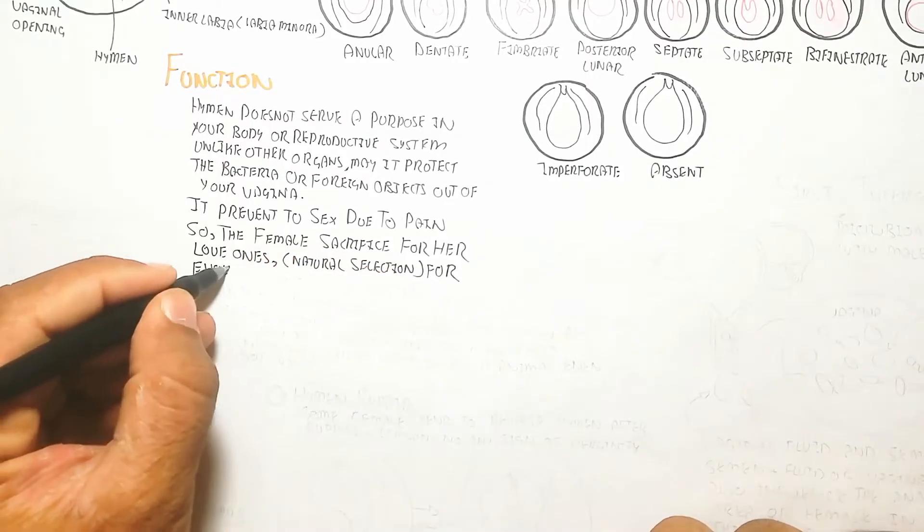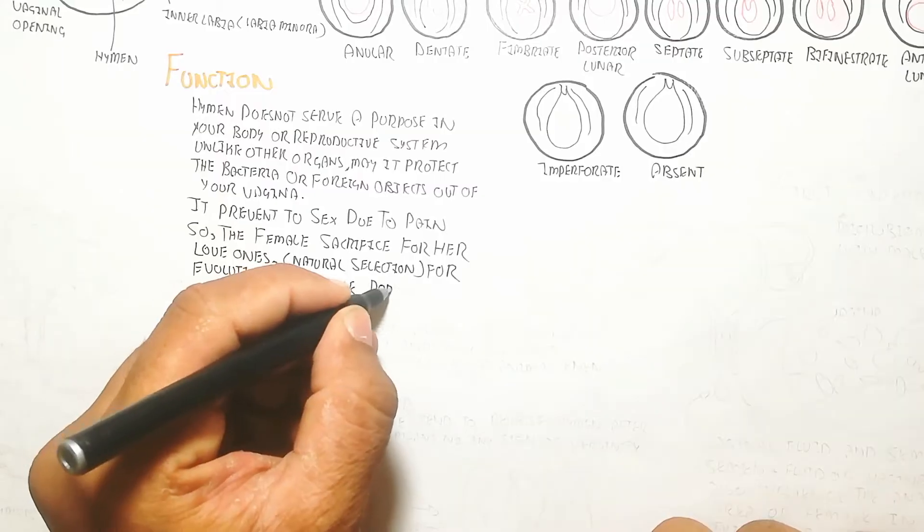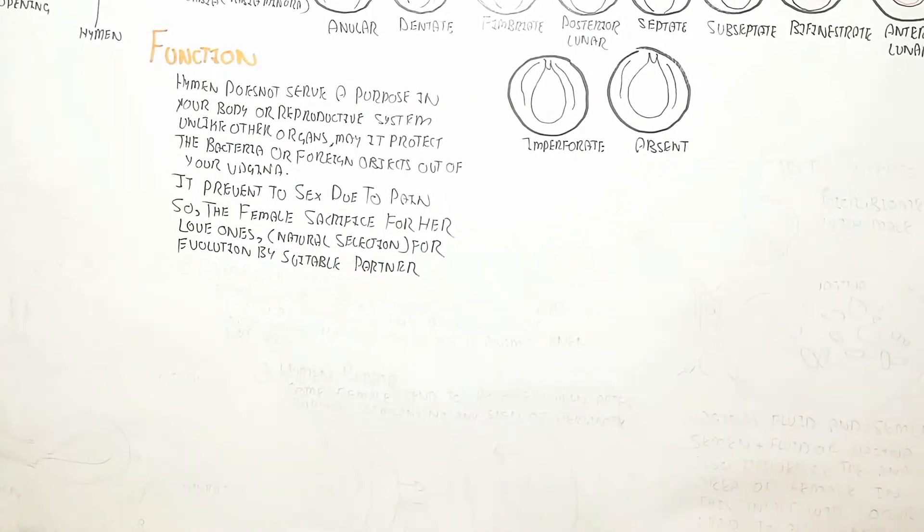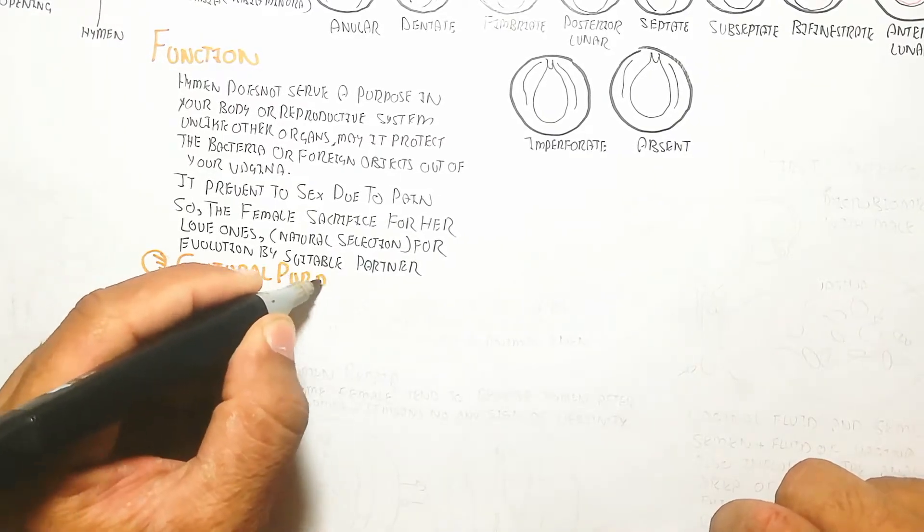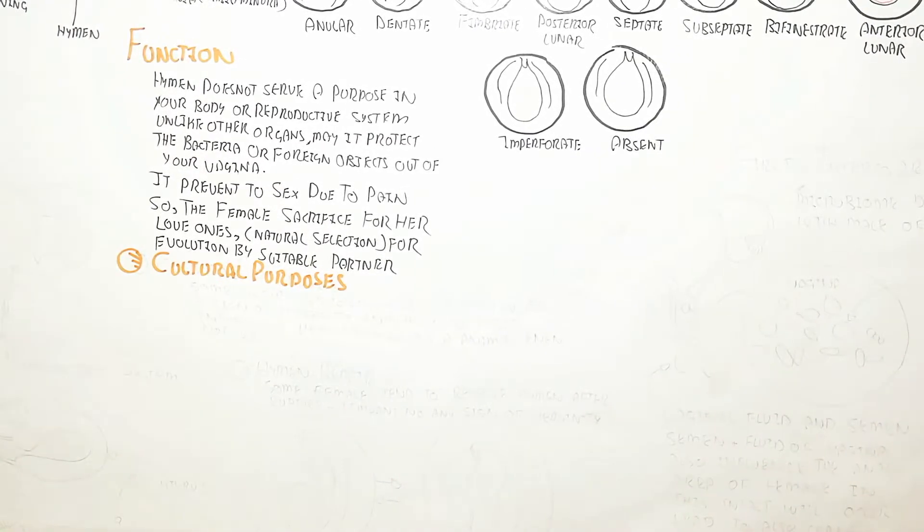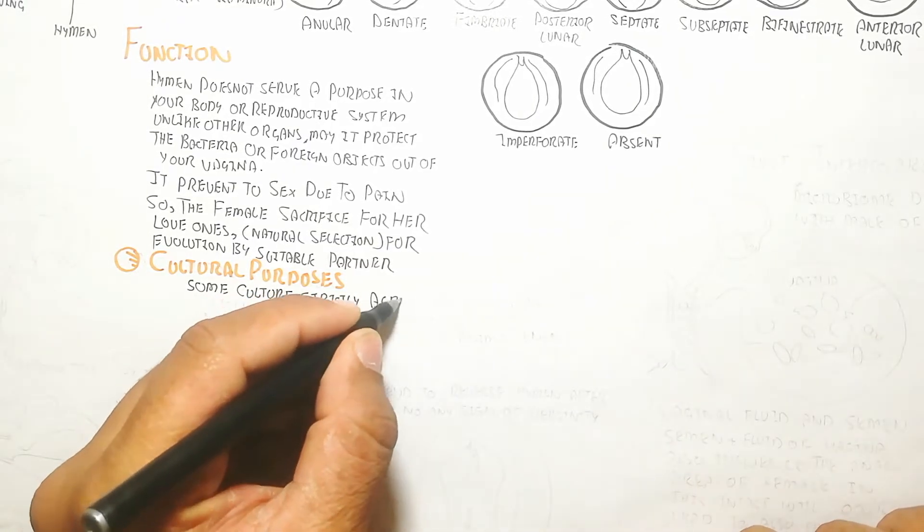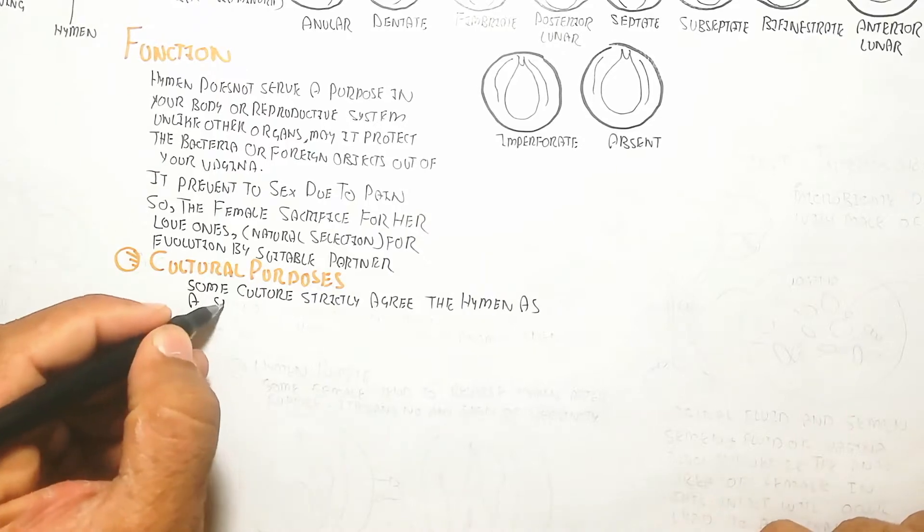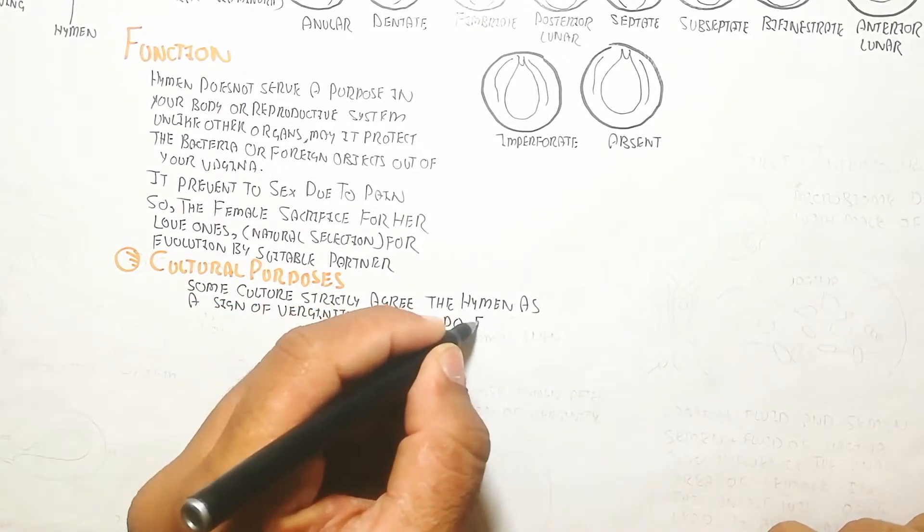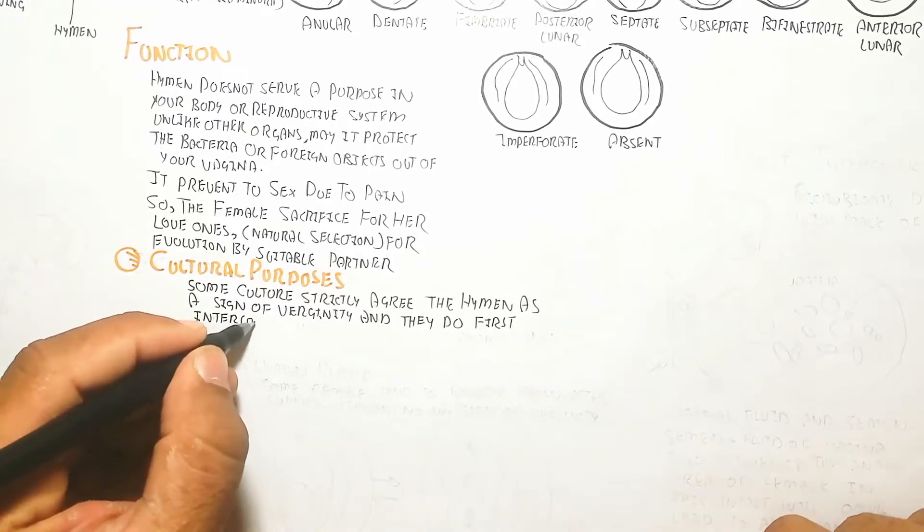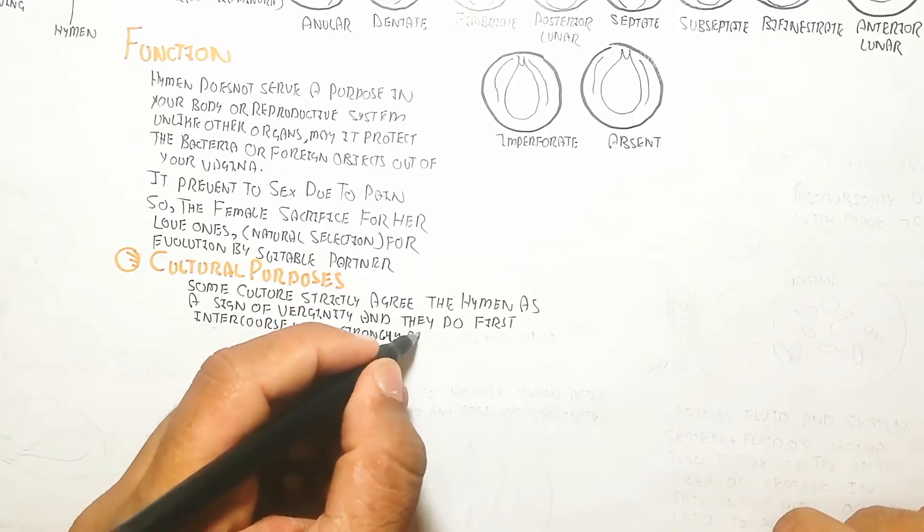The female sacrifices for her loved ones through natural selection and evolution by suitable partner. An amazing thing is that the female will sacrifice, which is the desire of the female for the male. That is why the choice of the person involves sacrifice and the loss of virginity.